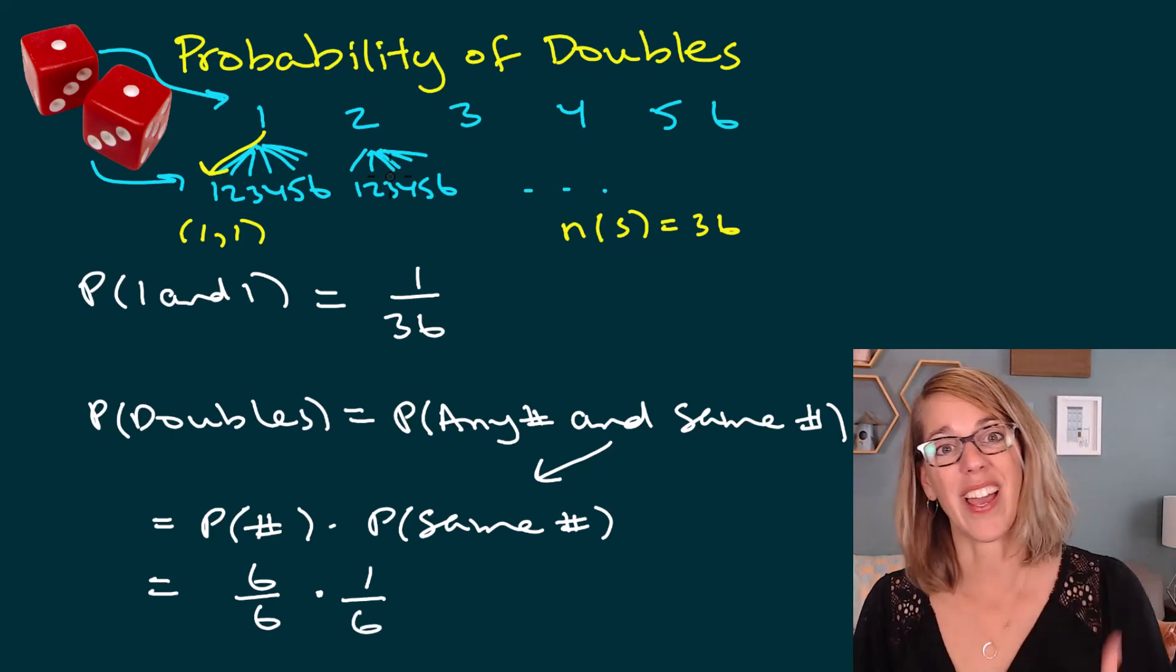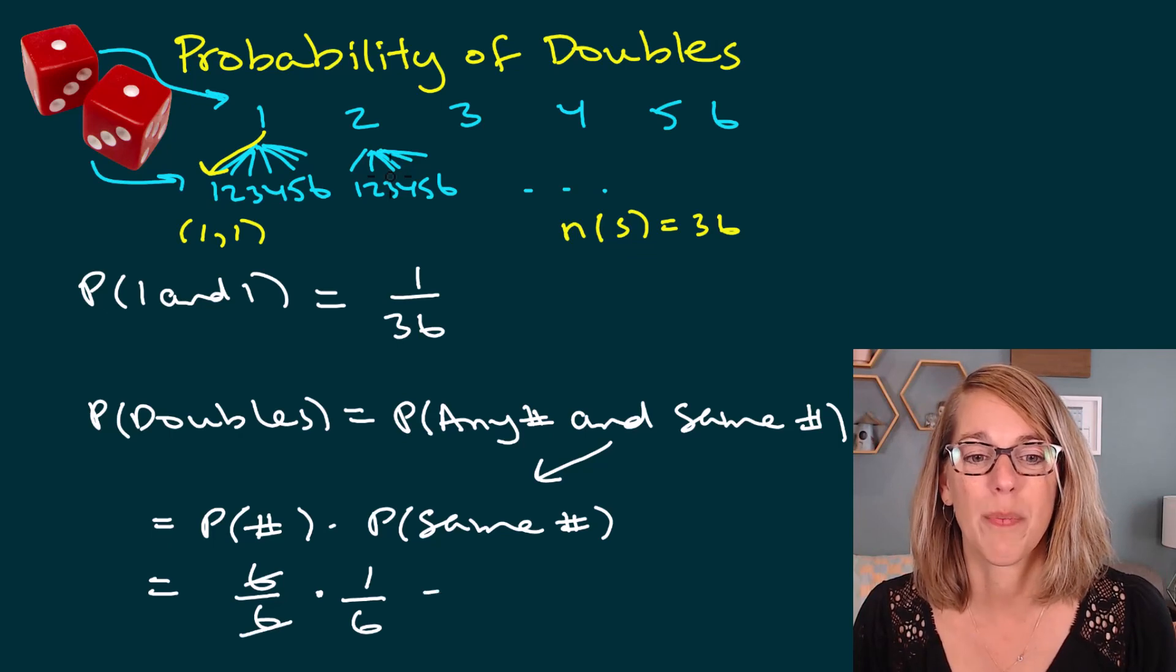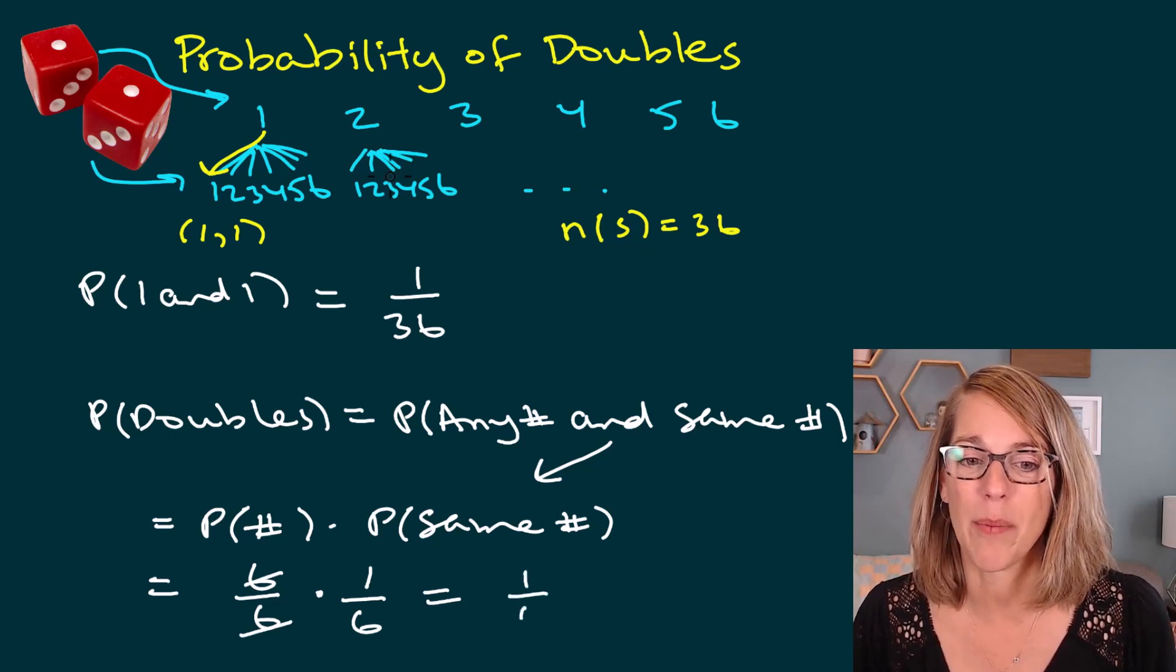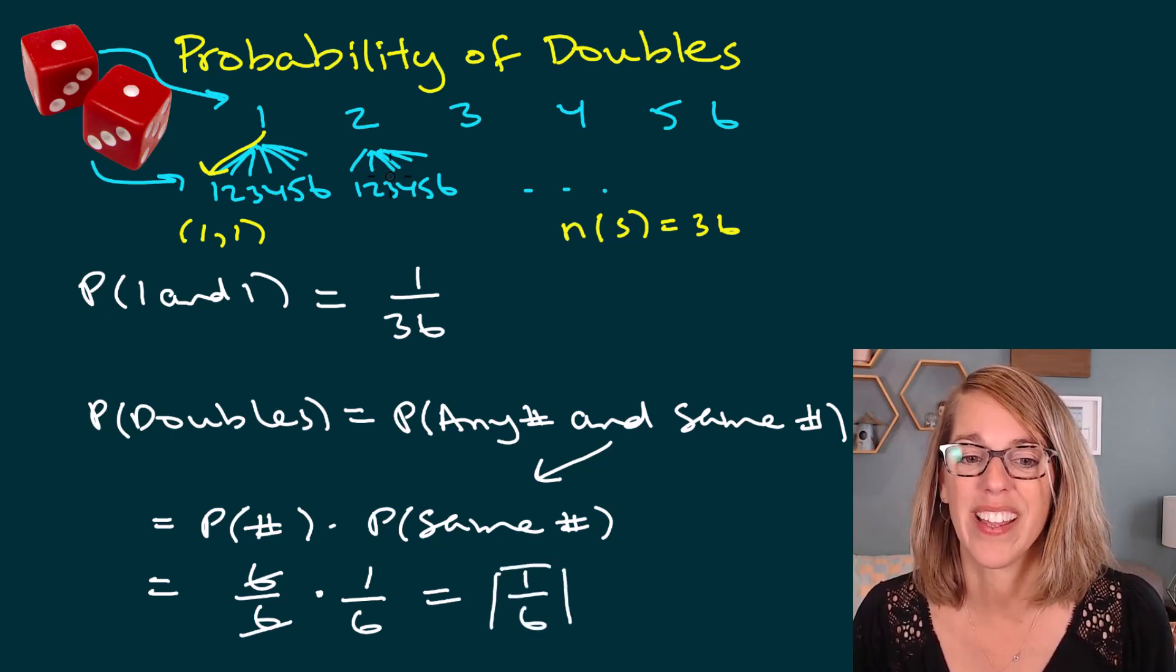So I get six out of 36, but I could also reduce this, and the probability of getting any doubles is equal to one out of six.